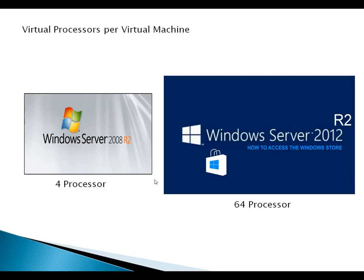If we talk about virtual processors per virtual machine, in Server 2008 R2 it can support up to four processors, but in case of Server 2012 R2 it can support up to sixty-four processors. This is a very strong and useful feature as compared to Server 2008 R2.